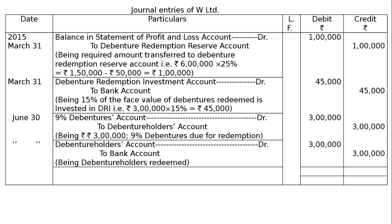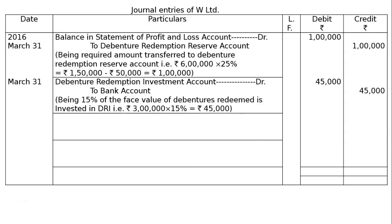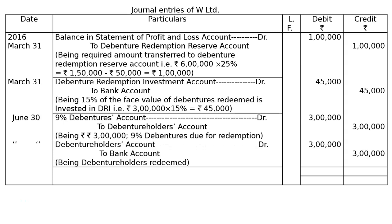The year should be 2016 — by mistake it was written as 2015, and it has now been rectified. The entry for debenture redemption reserve account debited to general reserve has not been passed because all the debentures have not been redeemed — only 50% has been redeemed. The journal is to be totaled at rupees 7 lakhs 45,000 in both columns. This is the final answer.